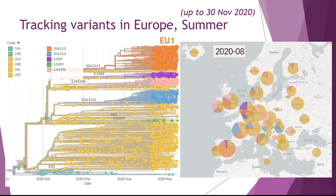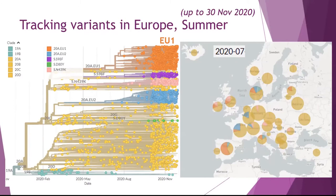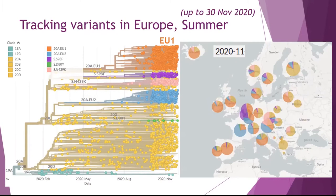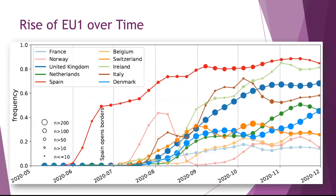How did this happen? We can look back in time and ask week on week what proportion of sequences for countries in Europe fell into EU1. When we do this for a few different countries, the most notable thing is that this seems to have started in Spain. We see EU1 first appearing in Spain, rising quickly to prominence through June, getting up to about 50% of sequences, and then continuing to increase more slowly until it was by far the most dominant variant circulating in Spain by the end of 2020.